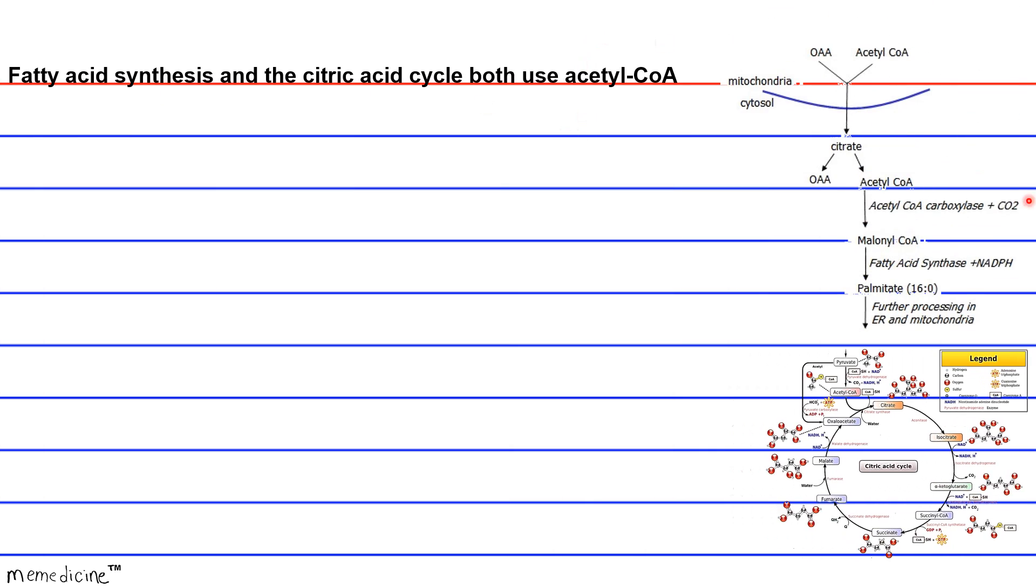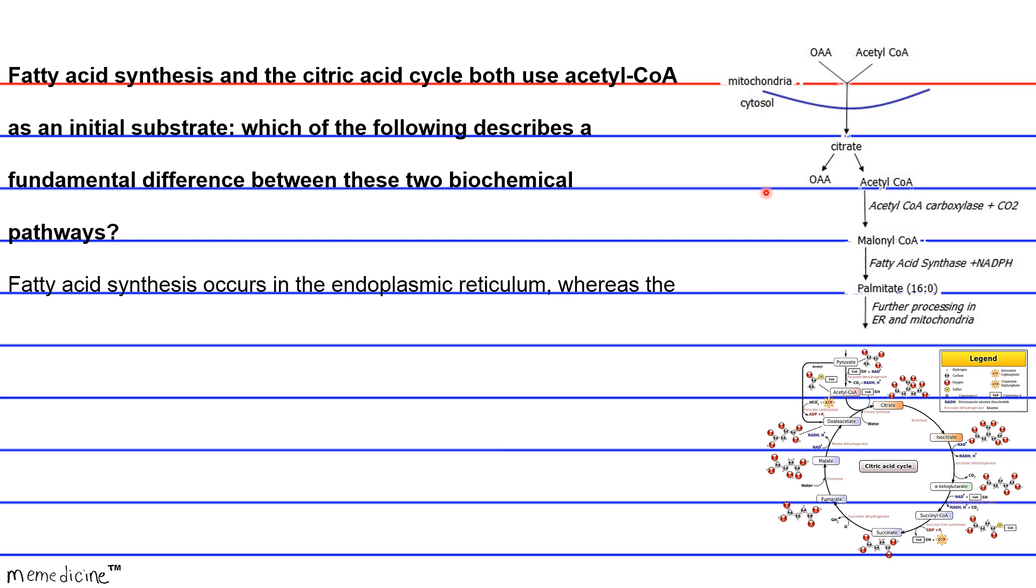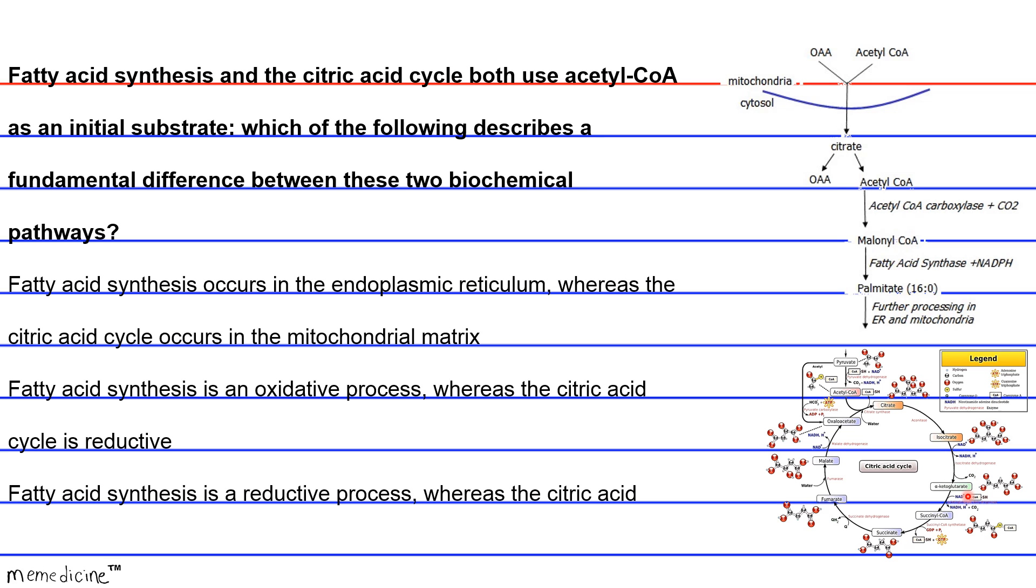Fatty acid synthesis and the citric acid cycle both use acetyl-CoA as an initial substrate. Which of the following describes a fundamental difference between these two biochemical pathways? Is it A: fatty acid synthesis occurs in the endoplasmic reticulum, whereas the citric acid cycle occurs in the mitochondrial matrix? Is it B: fatty acid synthesis is an oxidative process, whereas the citric acid cycle is reductive? Or is it C: fatty acid synthesis is a reductive process, whereas the citric acid cycle is oxidative? I'll give you a moment to look at the reactions and then come up with an answer.